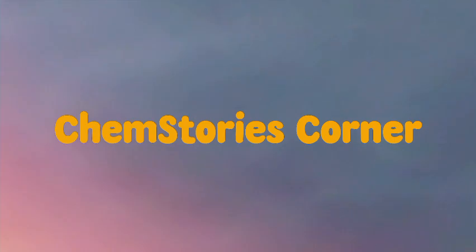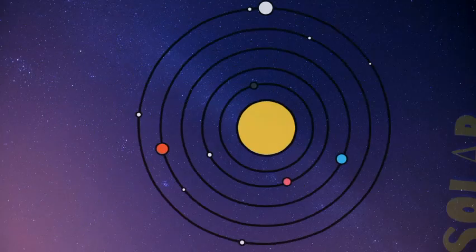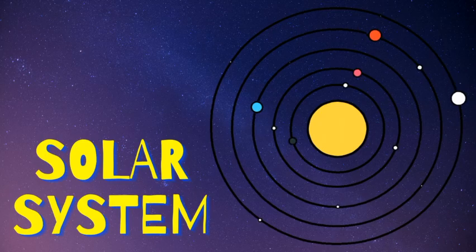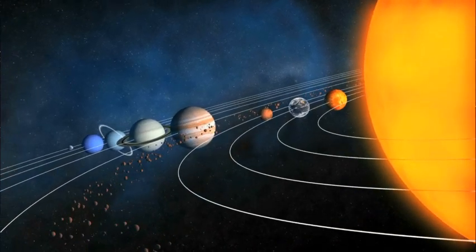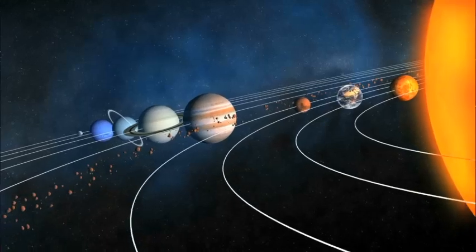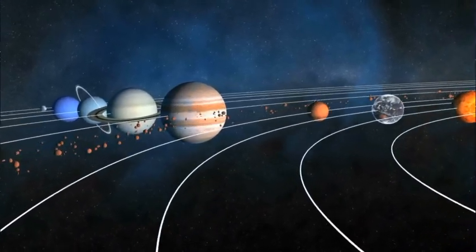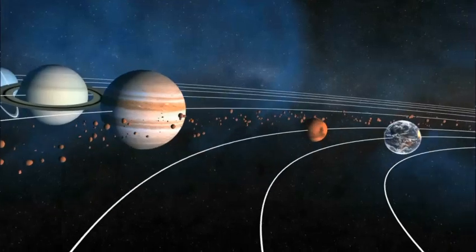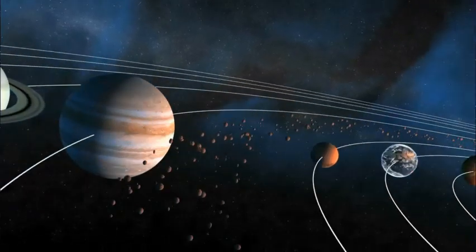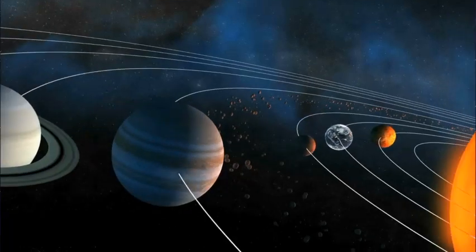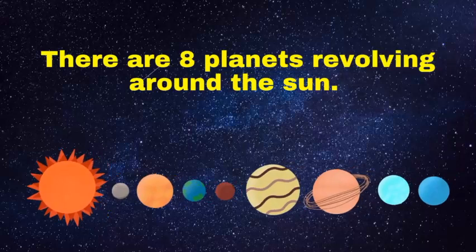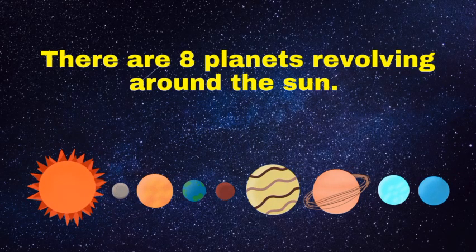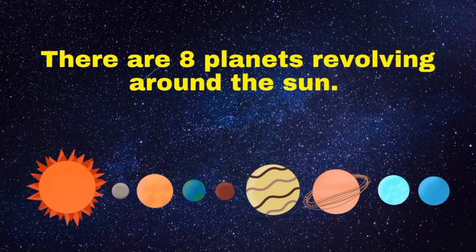Welcome to Camp Stories Corner. Today we will learn about solar system and its planets. The sun and all the planets revolving around the sun, some smaller bodies like dwarf planets, asteroids and comets make solar system. There are eight planets revolving around the sun.